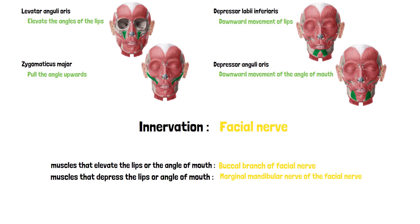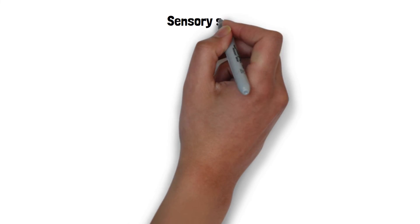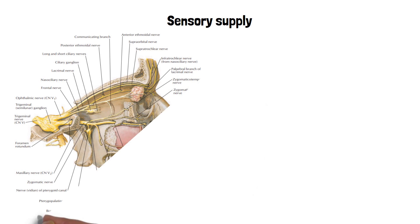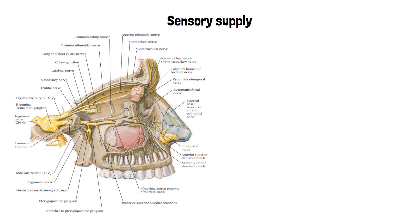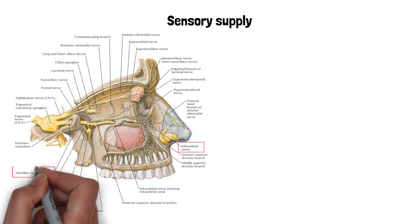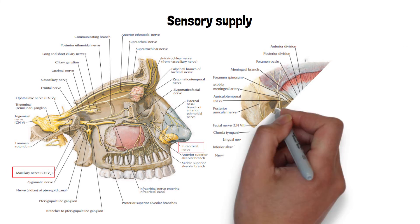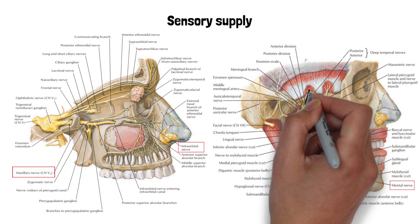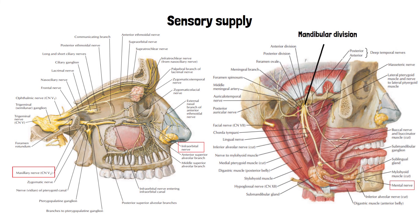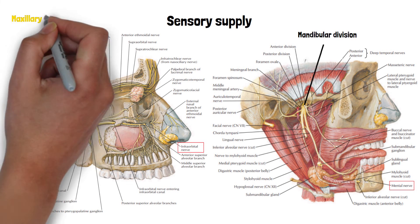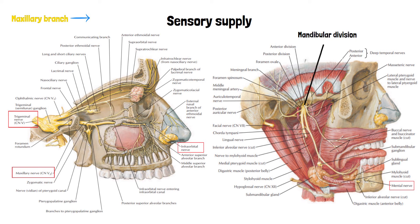Moving on to the nerve and blood supply of the lips: the sensory supply of the upper lip is by the infraorbital nerve, which is a branch of the maxillary division of the trigeminal nerve. The lower lip is supplied by the mental nerve, which is a branch of the mandibular division of the trigeminal nerve. So both lips are supplied by the trigeminal nerve, but by different subsequent branches — the maxillary branch for the upper lip and the mandibular branch for the lower lip.